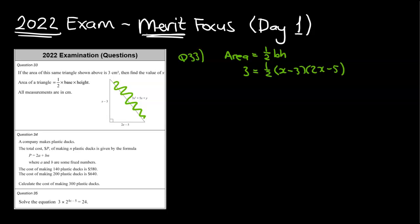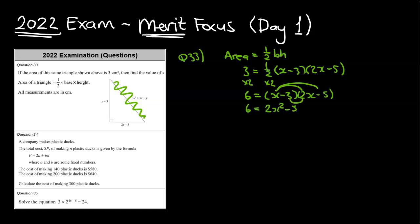I'm going to start by getting rid of this one half. I can get rid of that half by doing times 2 to both sides. So that means 6 will be equal to the brackets, which is x minus 3 times 2x minus 5. Not much here to do apart from expand. So 6 will be equal to 2x squared minus 5x, and then along the bottom minus 6x. And then we've got plus 15 because the two negatives result in a positive number. Let's simplify the terms in the middle — that becomes negative 11x.